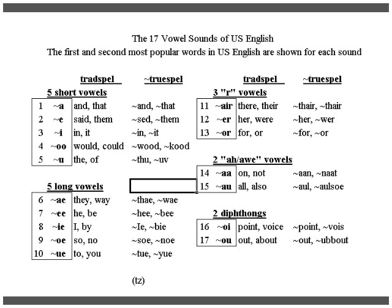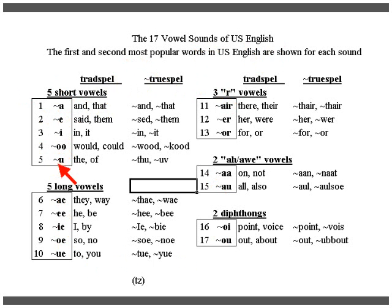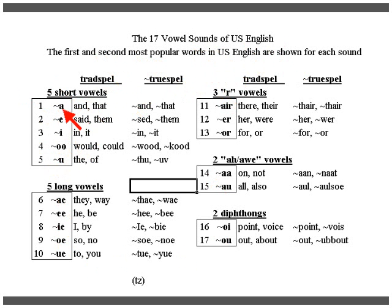These are the 17 vowel sounds of USA English. You see them numbered in the boxes. The symbology is there — the TrueSpell symbology with the tilde indicated. The first and second most popular words containing those sounds are shown for each sound.